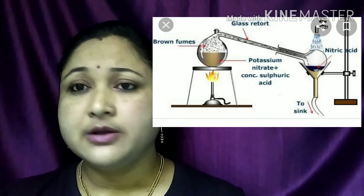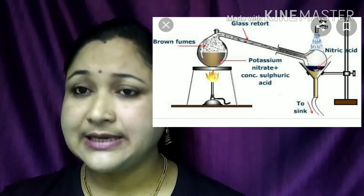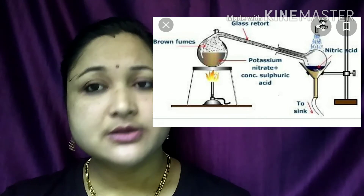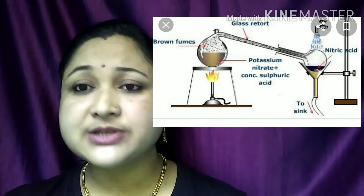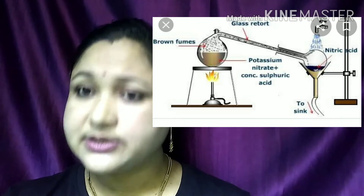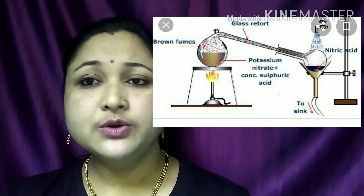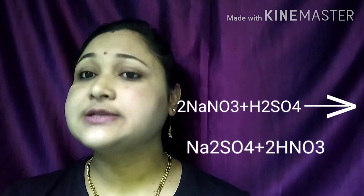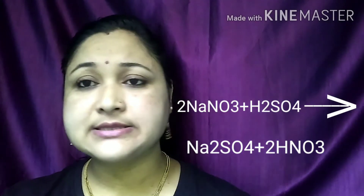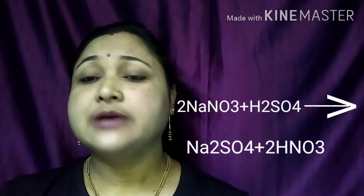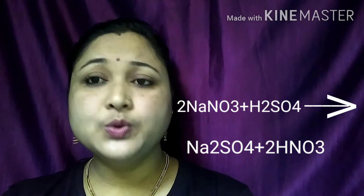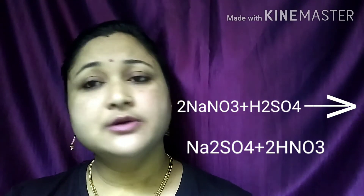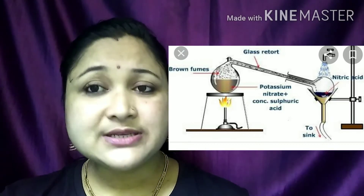In the experimental setup for nitric acid, sodium nitrate and sulfuric acid are placed in a round-bottom flask. Since this is an endothermic reaction, the reactants are heated to a temperature above 200°C. The resultant products — sodium sulfate and nitric acid vapors — are formed. The vapors are transferred through a glass retort and cooled under running tap water, and liquid nitric acid is collected.